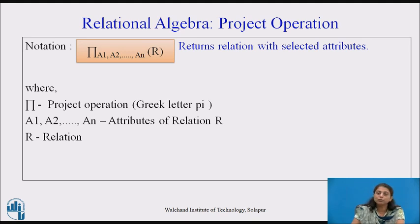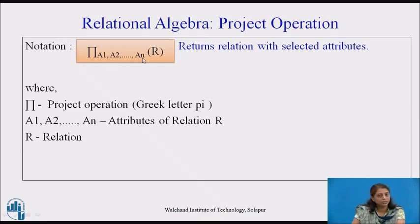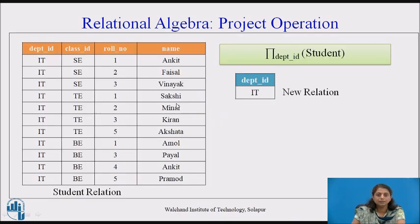The next operation is the project operation. Sometimes we don't want all attributes; we want only a few. The project operation returns a relation with selected attributes. It is denoted by the Greek letter pi. A1, A2, ..., An are the attributes we are interested in, and R is the relation.